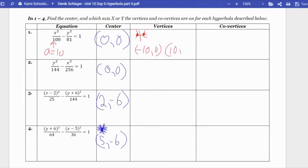Left 10, right 10, that's where my vertices will be. In number two, this one opens up and down. The square root of 144 is 12, so I'm going to move up and down 12. So up 12 from (0, 0) and down 12 from (0, 0), basically zero plus 12 and zero minus 12.